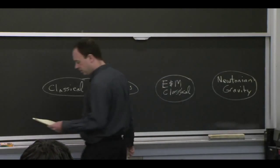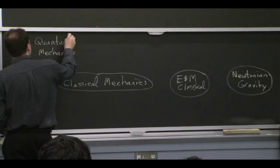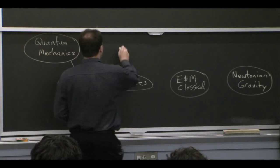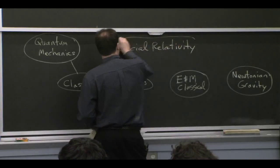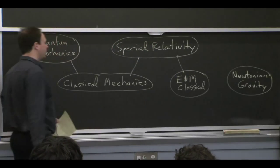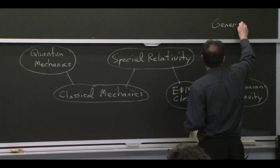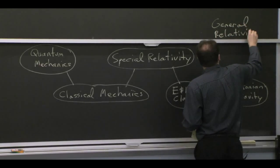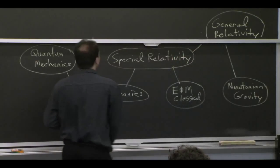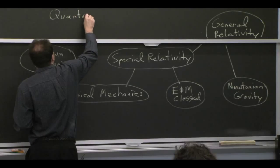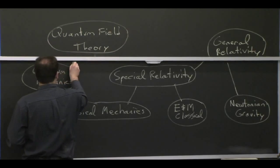And then you build on these things. These things are your starting point, and then you build on them. So you learn quantum mechanics. And that builds on classical mechanics. You learn special relativity, which is building on both classical mechanics and electromagnetism. At some point, you learn general relativity.